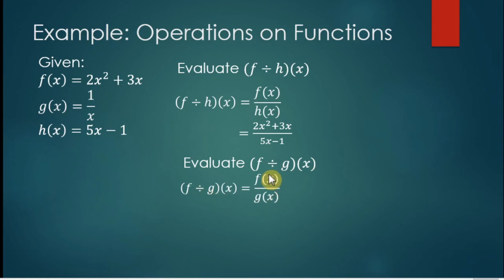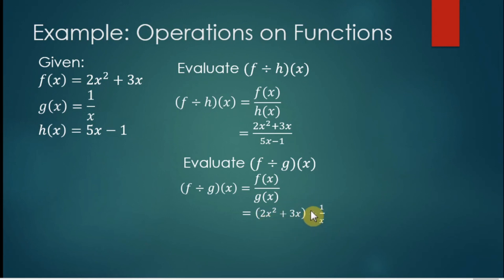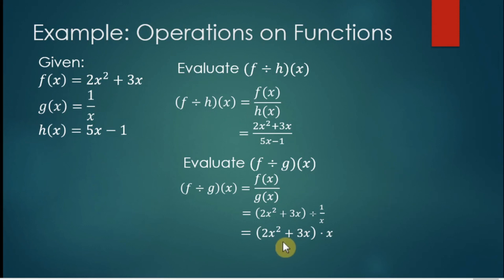Another example: we're going to divide f and g. By definition, f divided by g means the numerator is f of x and the denominator is g of x. Here g of x equals 1 over x. Our numerator is 2x squared plus 3x and our denominator is 1 over x. We can write this as 2x squared plus 3x times x, because we take the reciprocal of 1 over x — we change division to multiplication by multiplying by the reciprocal.